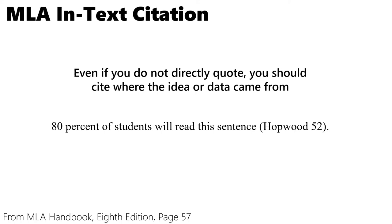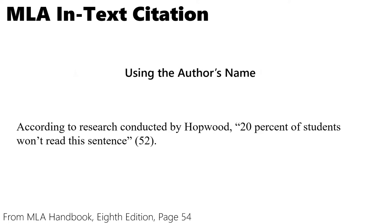If the author is already mentioned in the sentence, then for the citation you can just put the page number. For example: 'According to research conducted by Hopwood, [quote] 20% of students won't read this sentence (52).' Since we already mentioned the author Hopwood earlier in the sentence, we don't have to put the author's name again in the citation. Some professors don't like this style of quoting, so again, listen to your professors — they'll tell you whether they like this or not.